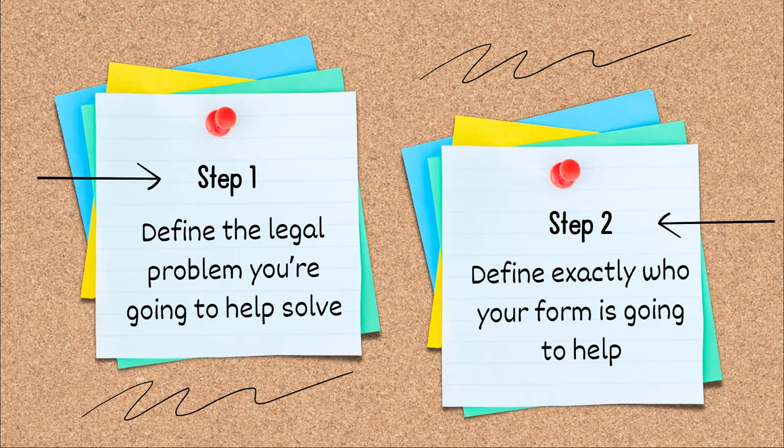Next, you want to define exactly who your form is going to help. Not every form is right for every person. Not every person in that legal situation should or can use automated self-help resources. Going off the A to J land start a divorce example, for step two, I'd limit my project to only help people who jointly own property less than $50,000 and who have fewer than five children and those children all have to have the same legal parents. This is the start of creating my user persona for the theoretical person who is going to use my document assembly project.